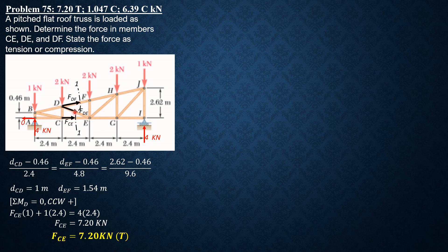To solve for FDF, we sum up moments about E. Using the principle of transmissibility, we move FDF to point F so that only the horizontal component of FDF has a moment about E — the vertical component passes through A and is not involved. The angle FDF makes with the horizontal is arctan of 0.54 over 2.4 = 12.68 degrees.